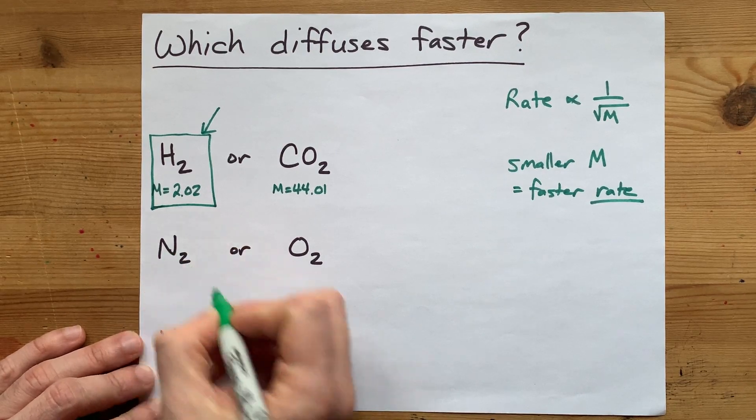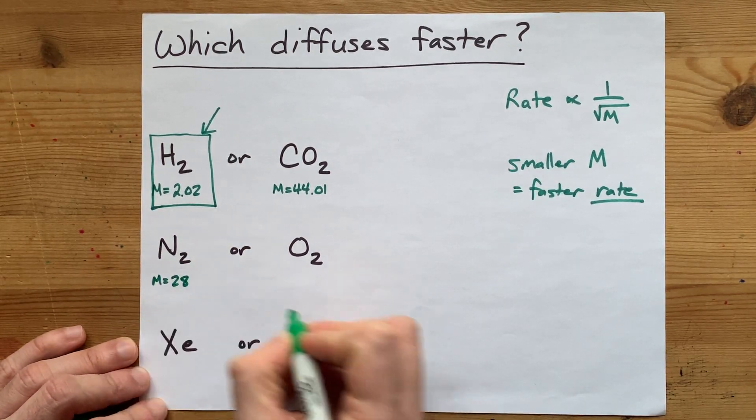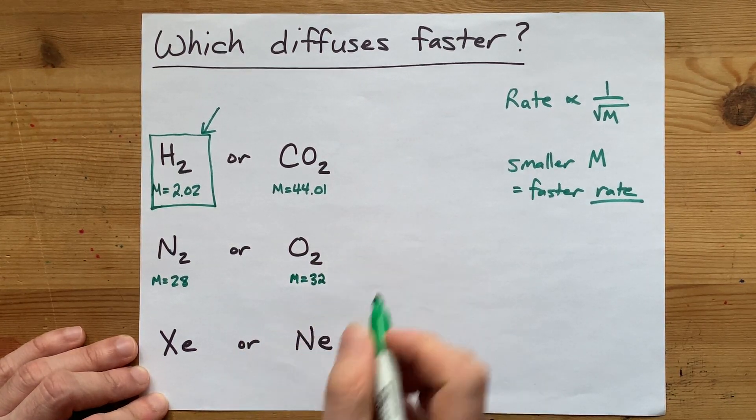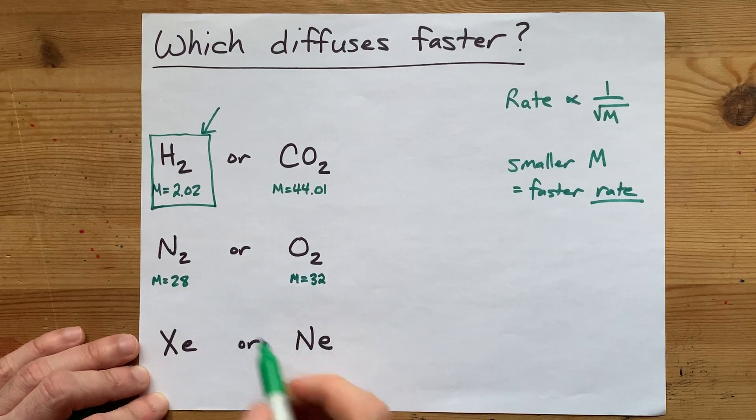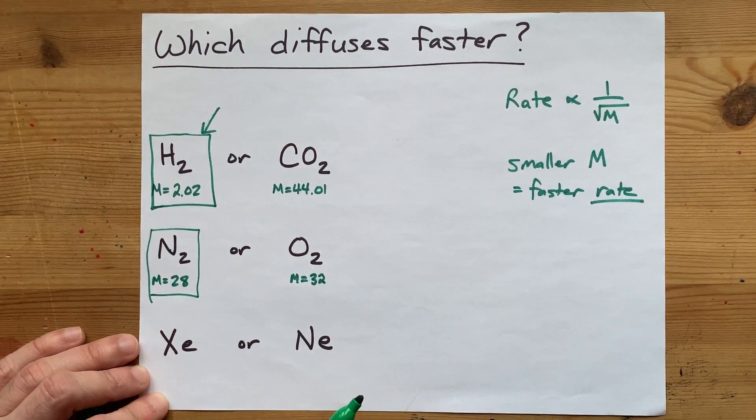Nitrogen is 14. There's two of them in each molecule. The molar mass is about 28. Oxygen is 16 each. Two of those per molecule make 32. 28 versus 32. That's the smaller one. It diffuses faster.